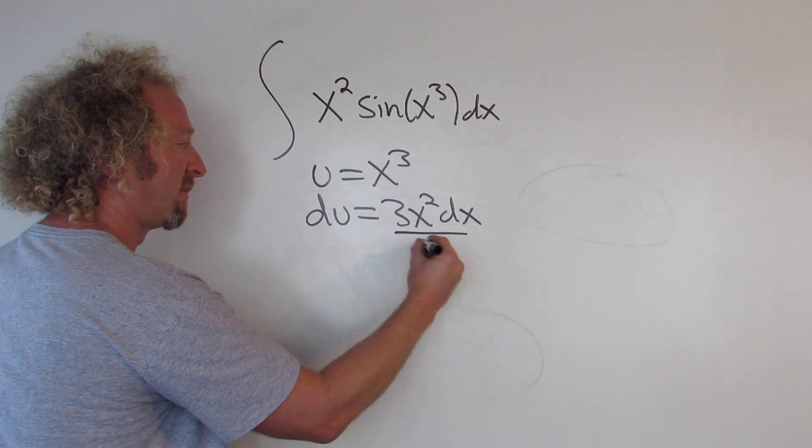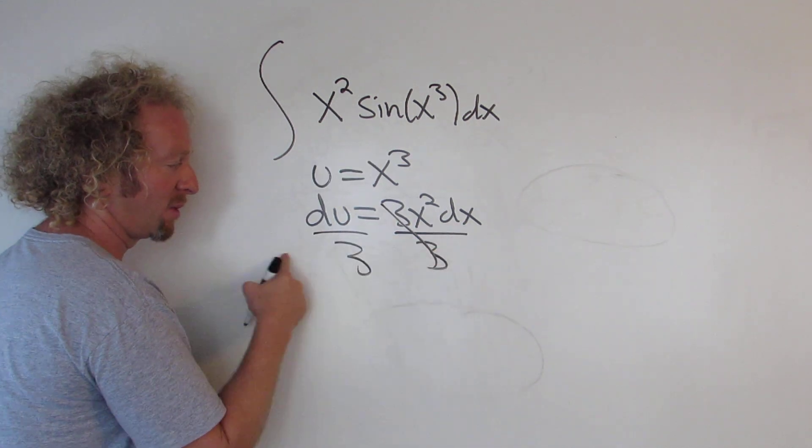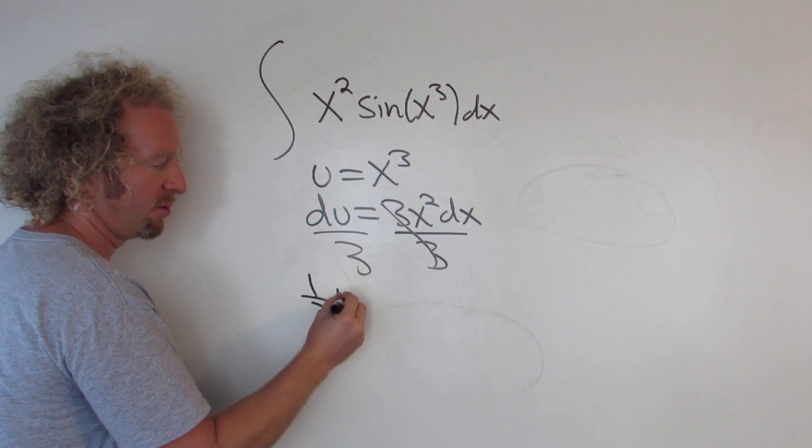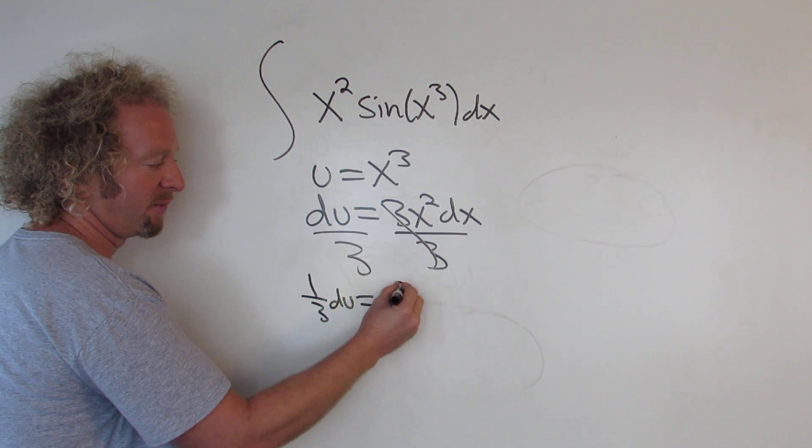So we'll divide both sides by 3. So we end up with du over 3, which I'll write as 1 third du, and that's equal to x squared dx.